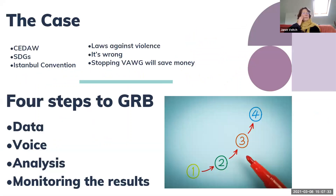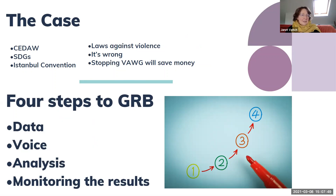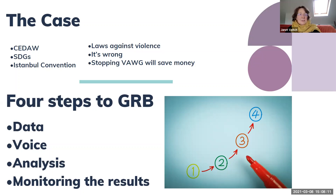Normally when women's organizations try to build the case for government doing something, they talk about the moral case and the legal case. For example, we've got the Convention on the Elimination of All Forms of Discrimination Against Women, the Sustainable Development Goals, the Istanbul Convention from the Council of Europe, and laws against violence against women. But one of the things that worked very well in the UK was when we were able to say to government that if you stop violence against women and girls, it will save you money. That economic case made a big difference.